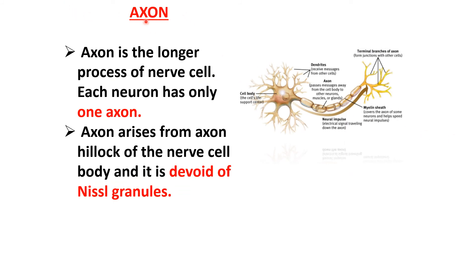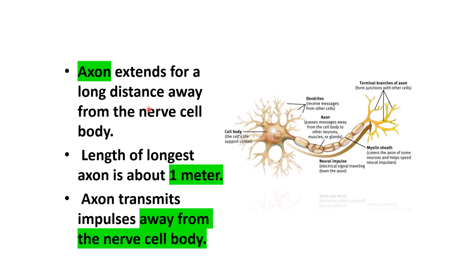The axon is a very long process of the neuron and each neuron has only one axon, while dendrites are many in number. The axon arises from the axon hillock of the cell body and is devoid of Nissl granules. In dendrites, Nissl granules are present, allowing dendrites to be differentiated from the axon. The axon extends for a long distance — the longest axon is about 1 meter — and transmits impulses away from the cell body.